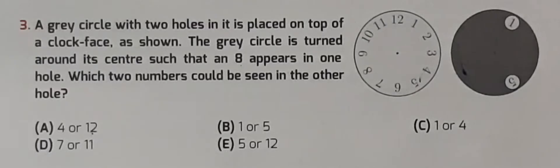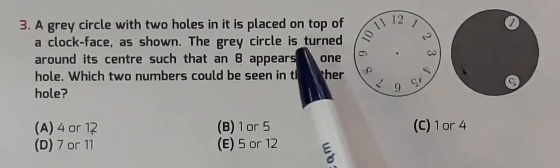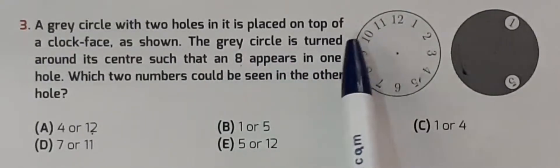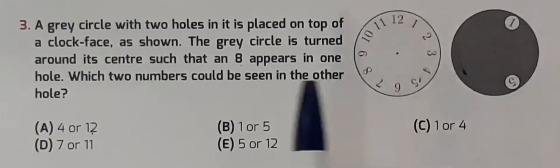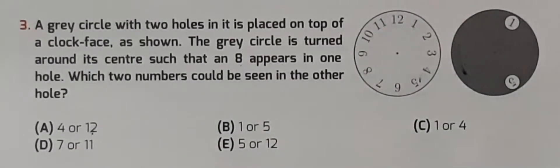So the question is, they have given us two clocks and said that the hole is placed on top of the clock face. The grey circle is turned around its center such that 8 appears in one hole, and we have to find which two numbers could be seen in the other hole. We have two options. I will tell you afterwards why we have two options.